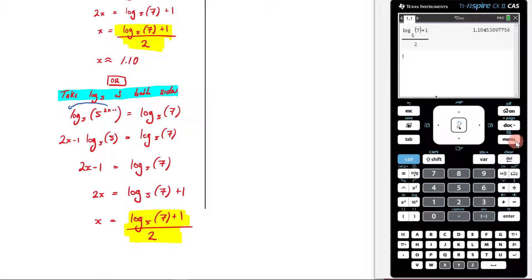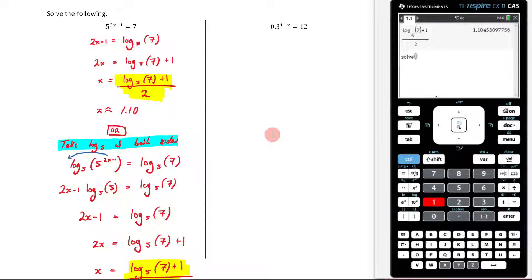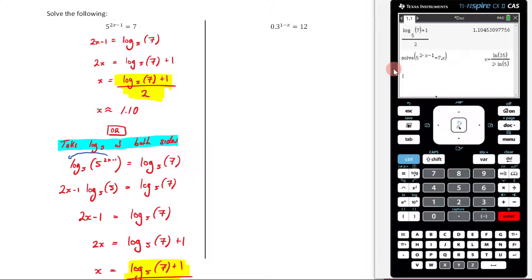Let's also talk about what would happen if we solve this straight with our solve menu 3, 1 to get this up. And then what is the question itself? It is 5 raised to 2x minus 1 is equal to 7 comma x. And if I hit enter, I'm going to get this.